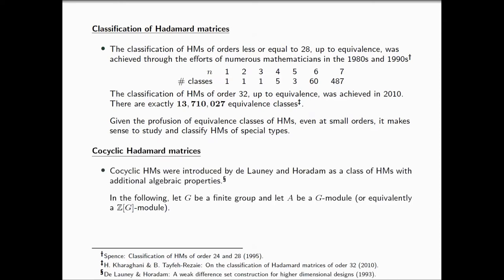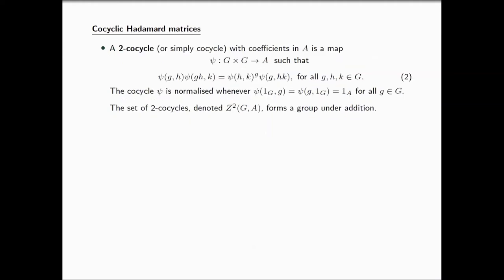One of these types is the family of cocyclic Hadamard matrices that were introduced by Delaunay and Horadam as a class of Hadamard matrices with additional algebraic properties. For the rest of the talk, G is going to be a finite group, and A is a G module, or equivalently, you can think of this as a Z G module. Allow me to introduce some definitions from group theory before we actually introduce a definition for a cocyclic Hadamard matrix.